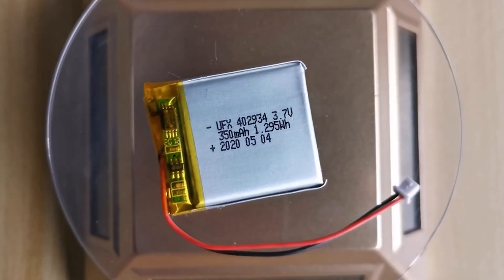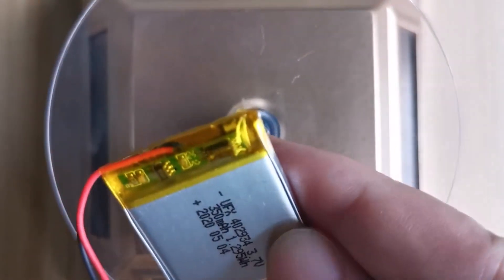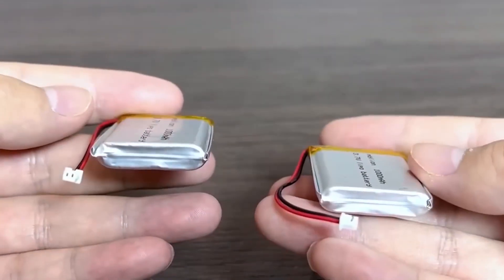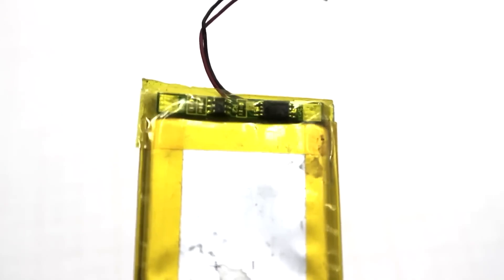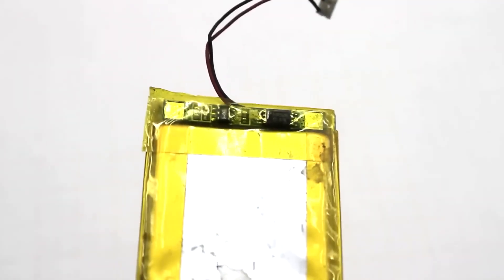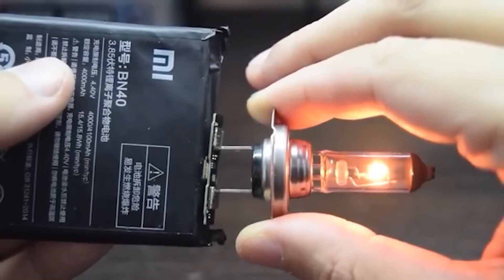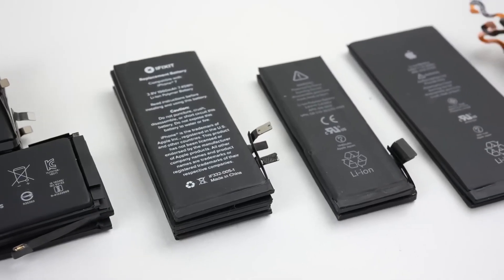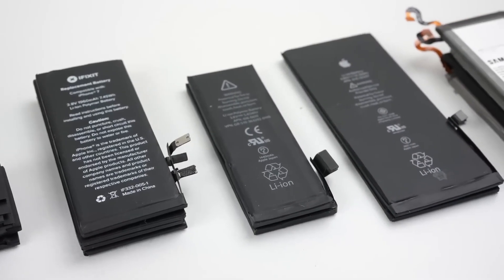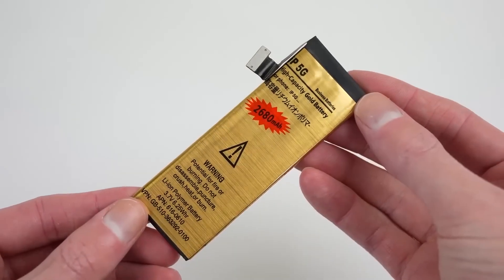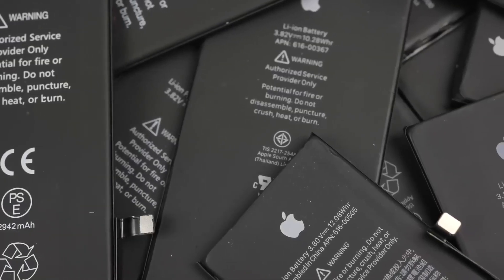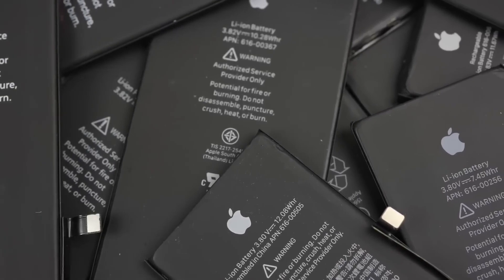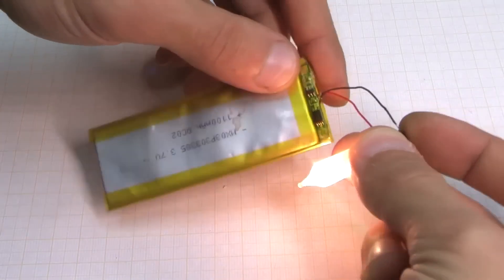For example, some time ago lithium polymer batteries became fashionable, in which the liquid electrolyte was replaced with a polymer gel. This reduced the risk of electrolyte leaks in case of mechanical damage and in general significantly increased the safety of batteries and their service life. The cost of this was a higher price per kilowatt-hour, and in addition, lithium polymer batteries do not perform well at low temperatures. There is a heated debate about whether the advantages of lithium polymer batteries outweigh their disadvantages, and I certainly do not presume to judge who is right.